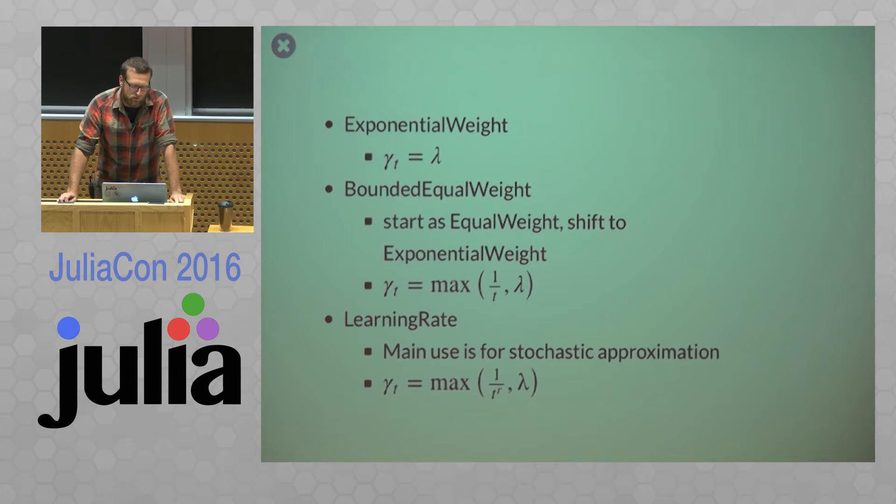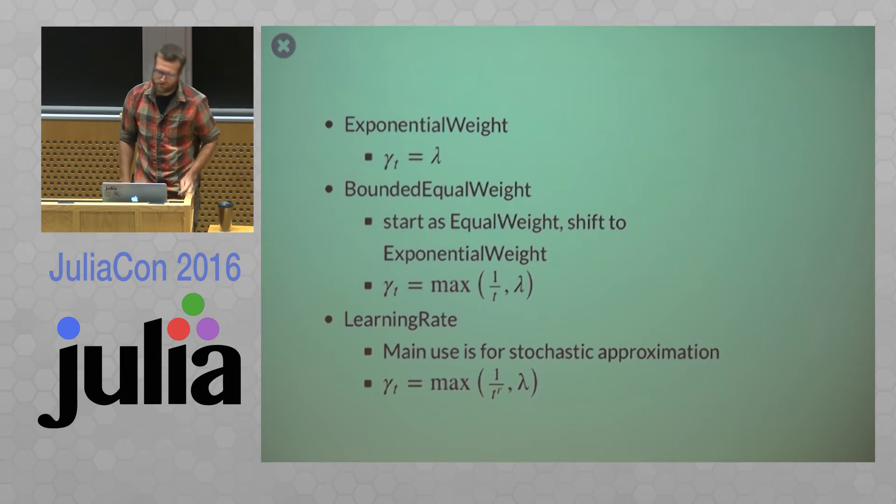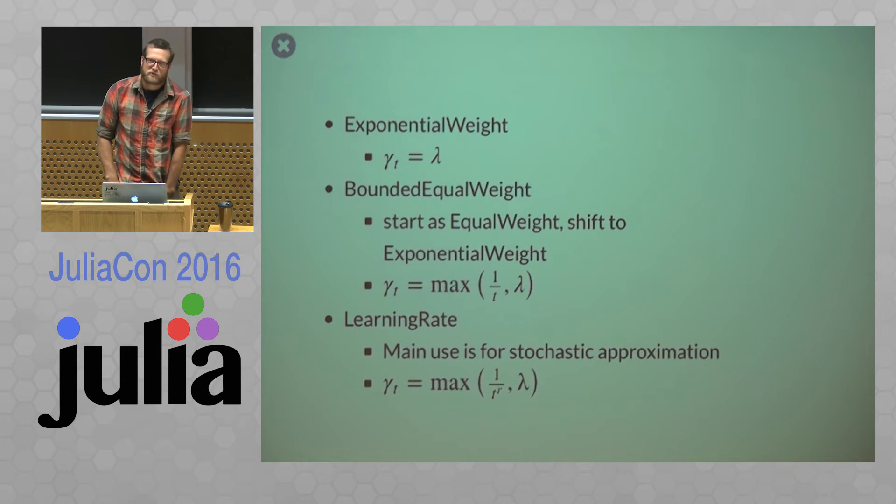And there's also a learning rate type. And my main use case here is for stochastic approximation methods. So these are for those impossible types which I talked about before. And so gamma is the maximum. So again you can give it some minimum value that it gets to. 1 over t to the r. And so r is typically between 0.5 and 1. So you can think of the weights as somewhere between 1 over t and 1 over square root t.